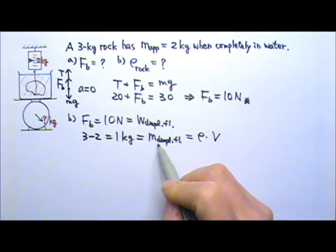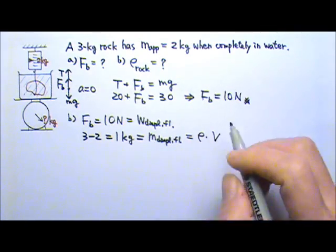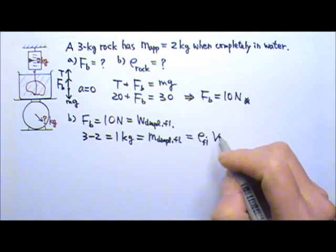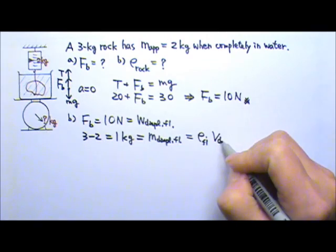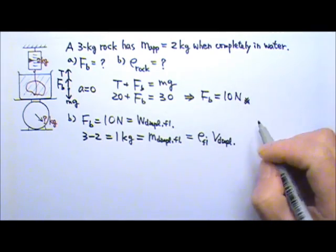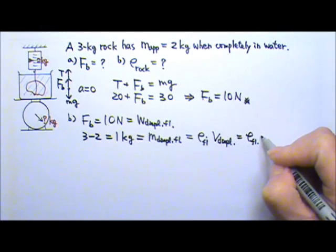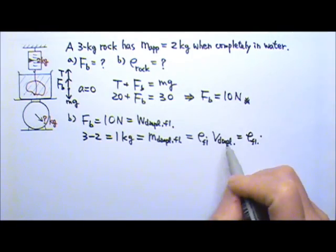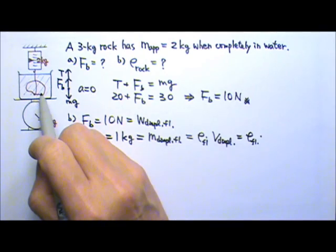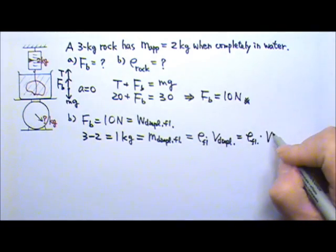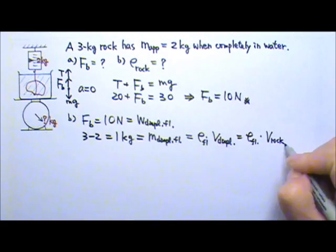Because this is the mass of the displaced fluid, so this density is the density of the fluid and the volume will be the displaced volume. That's the density of the fluid times the displaced volume. The entire rock is submerged, so the entire rock displaces the water. That means the volume displaced must equal to the volume of the rock.